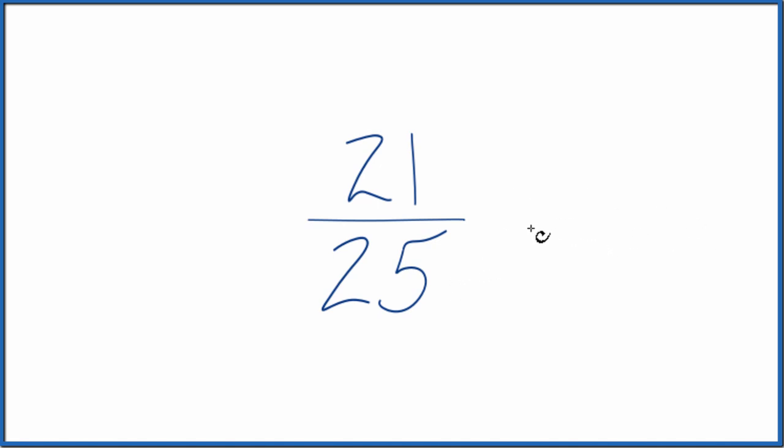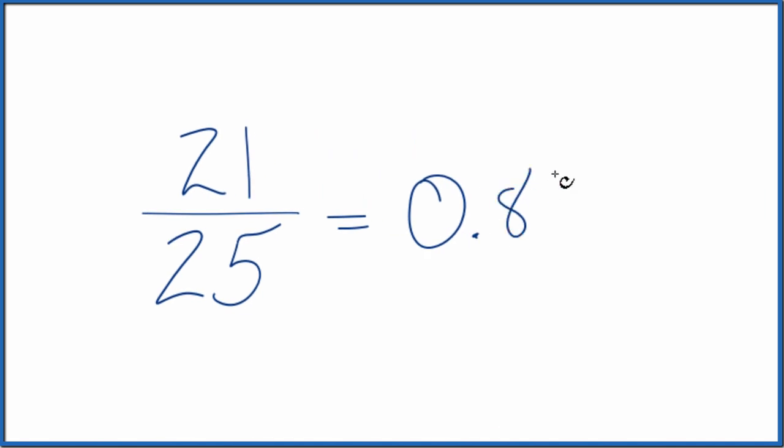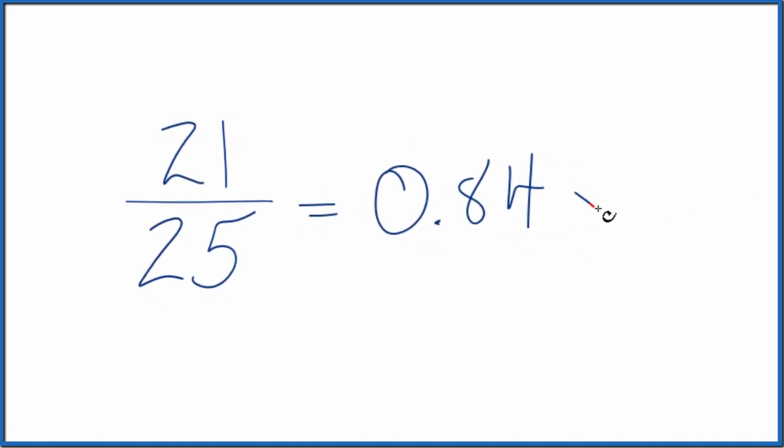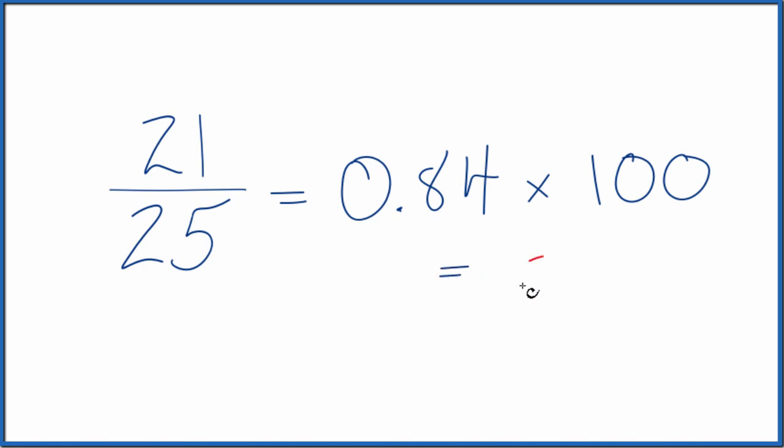There are two ways we could figure this out. First, we could just divide 21 by 25 on a calculator or longhand, and you get the decimal 0.84. Then to get a percent, you just multiply that by 100, and you get 84%. So you got a B. Not too bad.